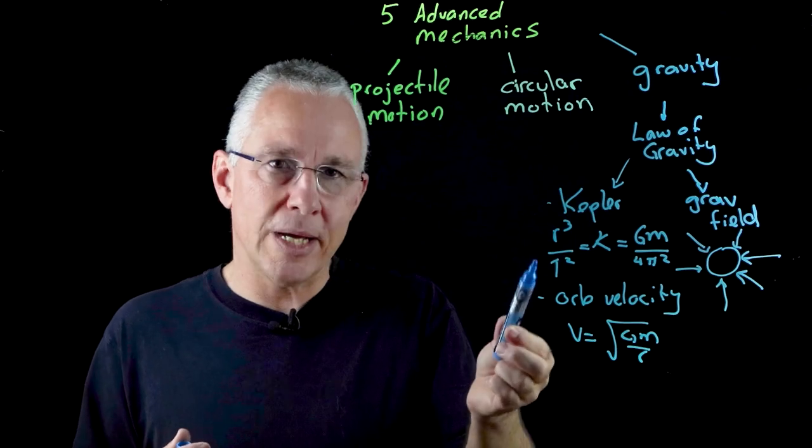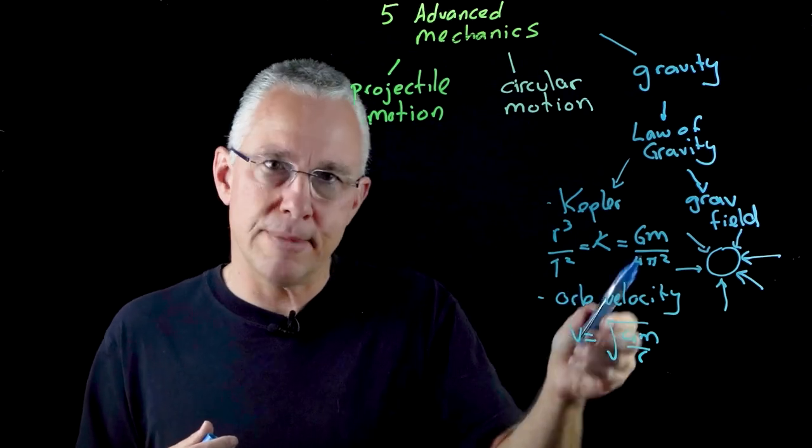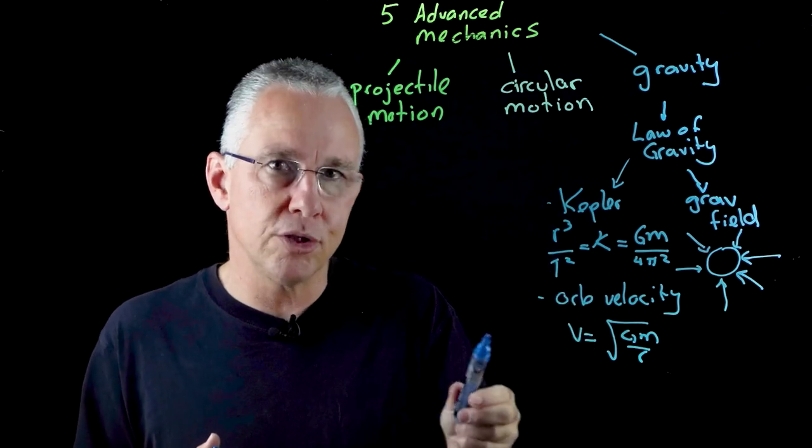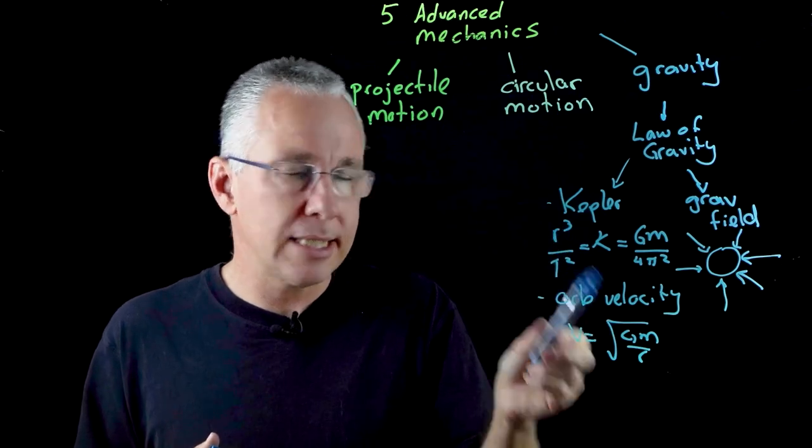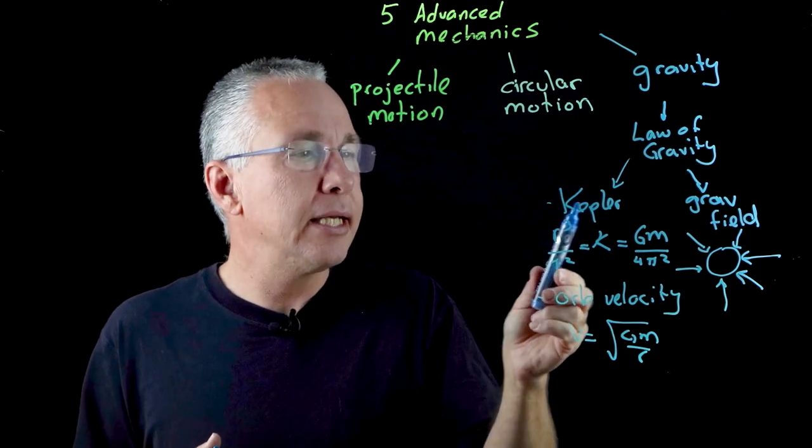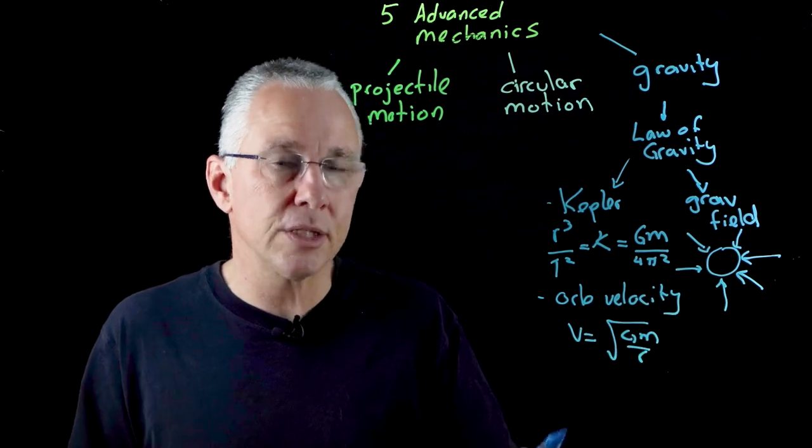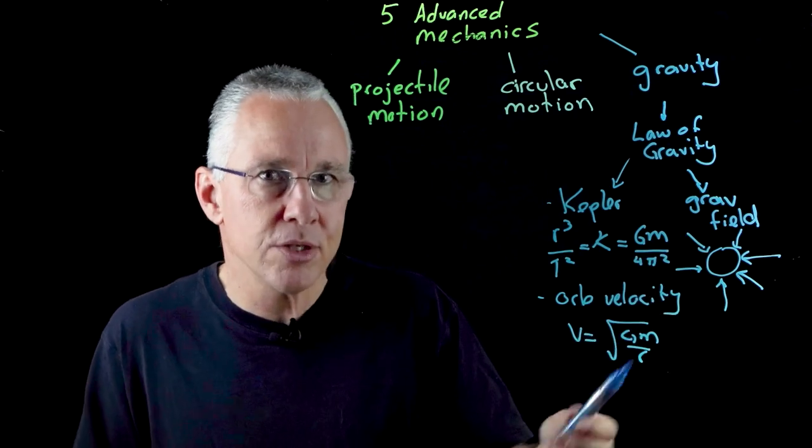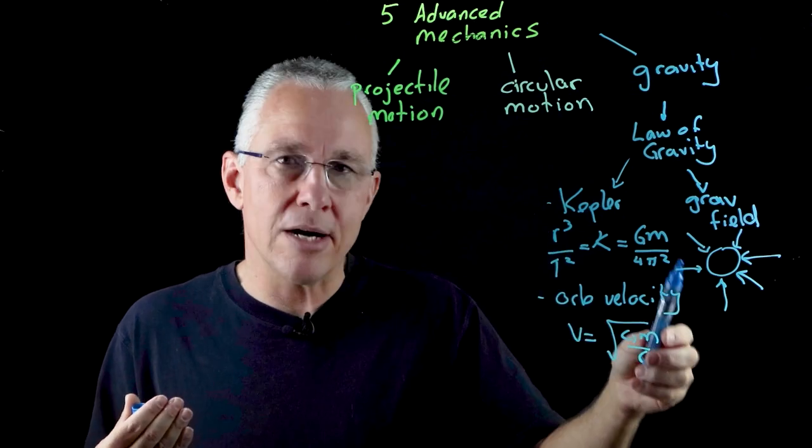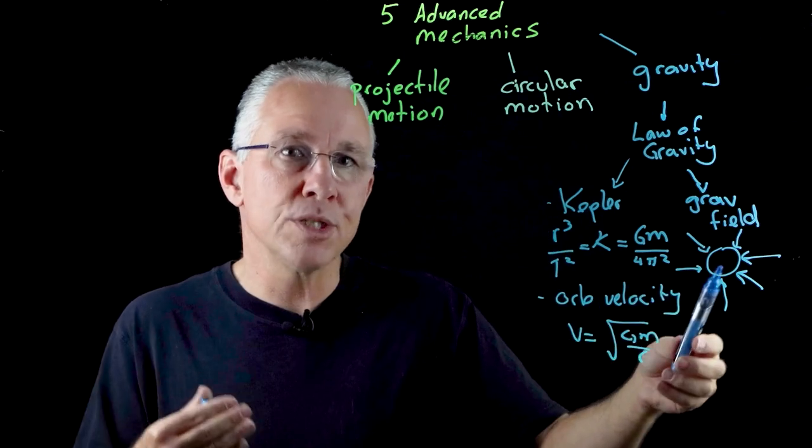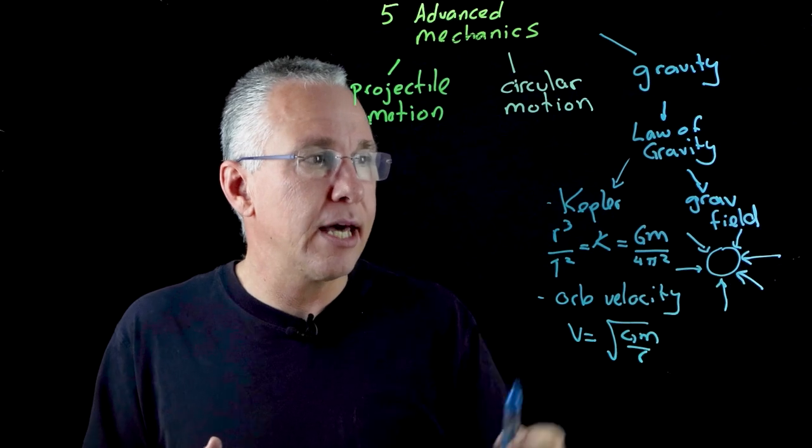I want to make a point here that we are using models again. We've got mathematical models here that explain the motions of planets and satellites around objects and over here we have a diagrammatic model which is a representation in this case of a field. We don't see the arrows but we do use those arrows to understand what forces are exerted on objects within that field.